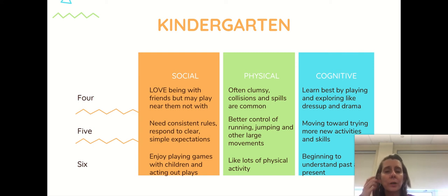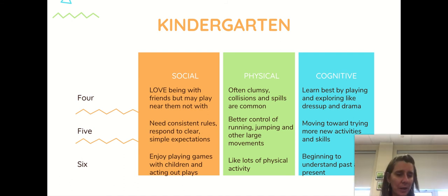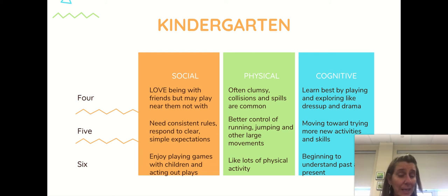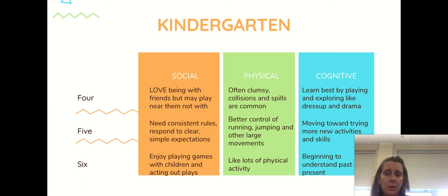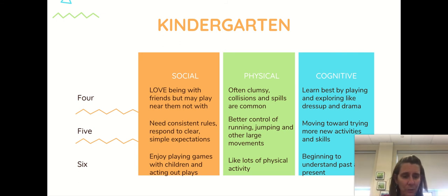Kindergarten. Socially, when thinking about a four-year-old, they love being with friends but may play near them and not exactly with them. At five, they need consistent rules and respond to clear, simple expectations. And at six, they enjoy playing games with children and acting out plays. Those are just one example from social for each age level — there are lots of examples within the different categories. You can see where your child might be doing something from the four-year-old list, something from the five-year-old, and something from the six-year-old. And that's all okay.